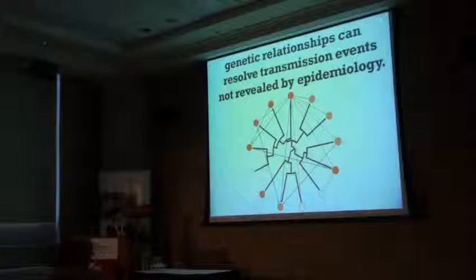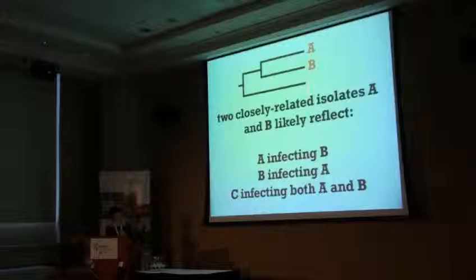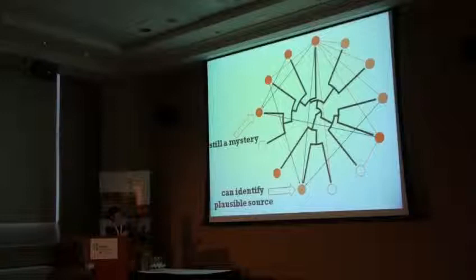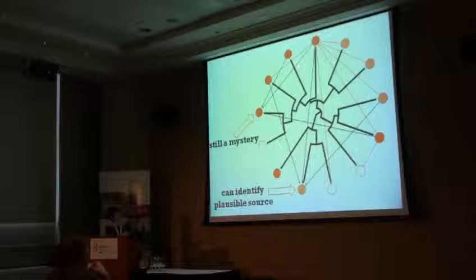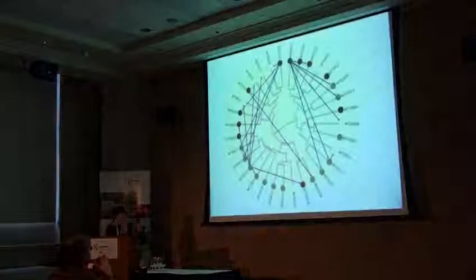For some fuzzier relationships — cases where after applying those rules we still have ambiguity — we can use the genetic data to further refine them. If two isolates are closely related, either they infected each other or they were infected by a common source. Applying that rule to our network, for one individual his nearest neighbor was infected by someone else, helping us identify the most plausible source among multiple candidates. Some cases remain a mystery where there are too many closely related potential source cases to rule out definitively. But you can apply genomic data to resolve ambiguous transmission events.